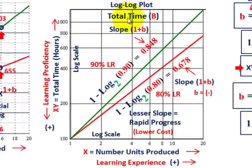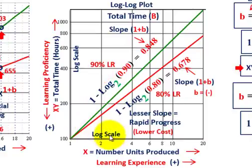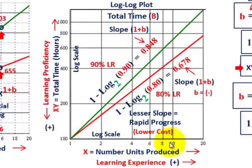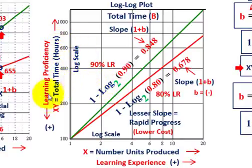Now for the log-log plot of cumulative time: on a log scale, we have a log scale on both axes. On the y-axis is total time in hours, increasing upward. Along the x-axis are the number of units produced. The lower our total time, the greater learning proficiency we have. As learning experience increases along the x-axis with more units produced, our learning proficiency is reflected by how low the total time remains.